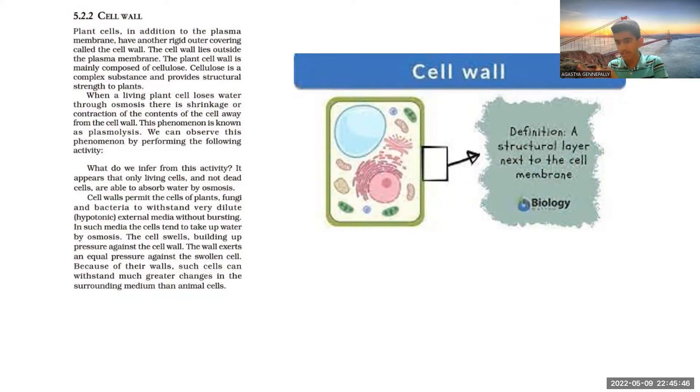The cell wall is an additional, special layer which is only present in plants. It is an additional layer on the cell membrane which is only present in plant cells, not in animal cells.